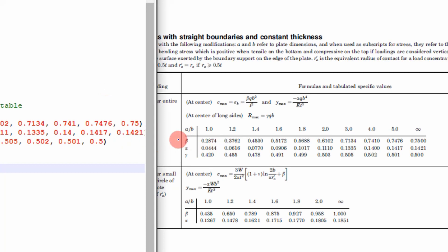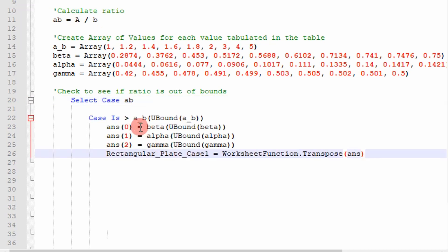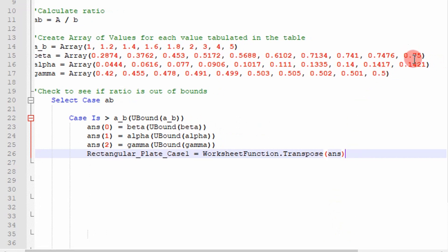So my case that I'm going to be comparing to or looking at is a divided by b. So if my case is a divided by b is greater than the last value in the a underscore b array, well, then I know I'm in this infinity column right here. So I just go ahead and I assign alpha, beta, and gamma. I pick the last value in their list. So that'd be over here on alpha, beta, and gamma.